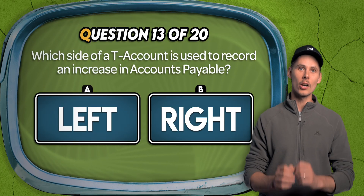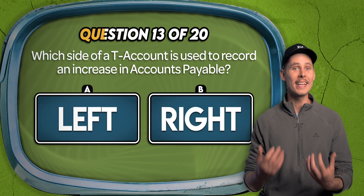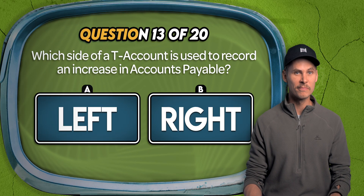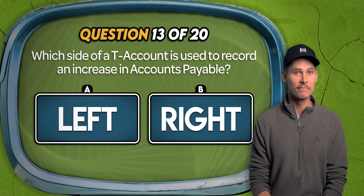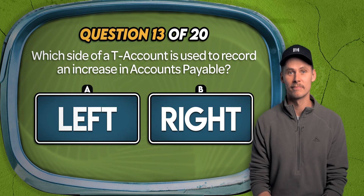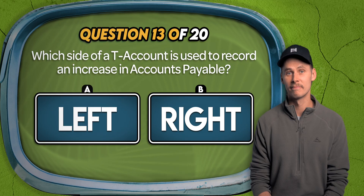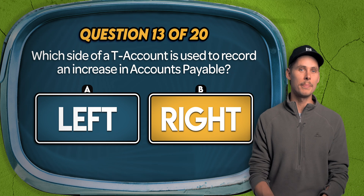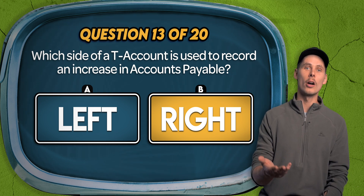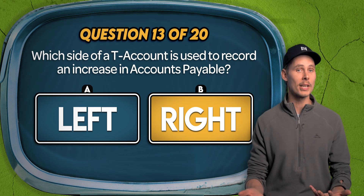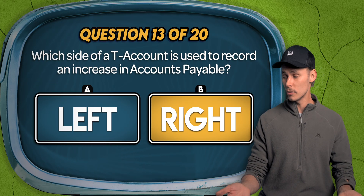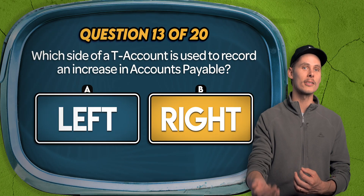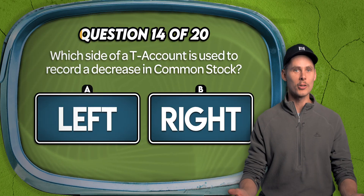Question 13. Which side of a T-account is used to record an increase in accounts payable? The left or the right? The answer is B. Accounts payable is a type of liability — it's represented by the L in DEALER. So it's a normal credit account, which means credits would increase it on the right side of the T-account.